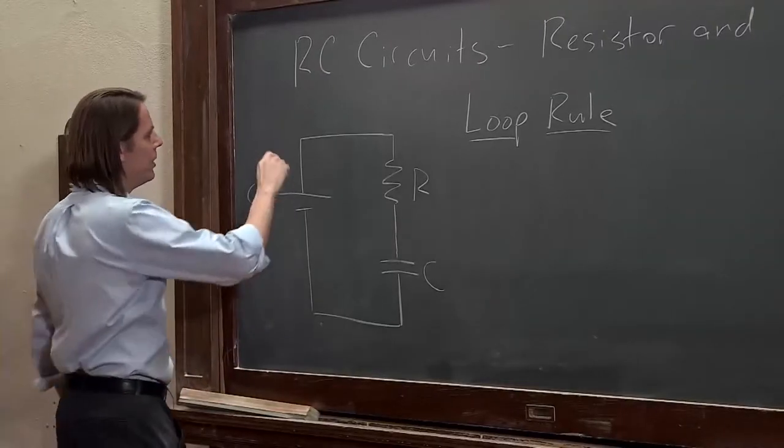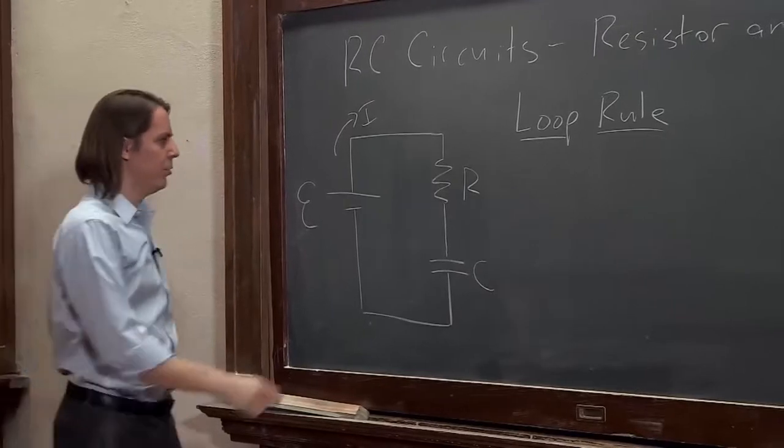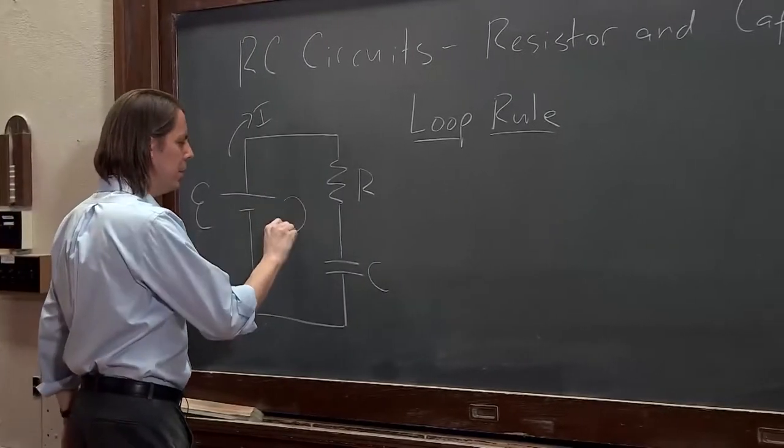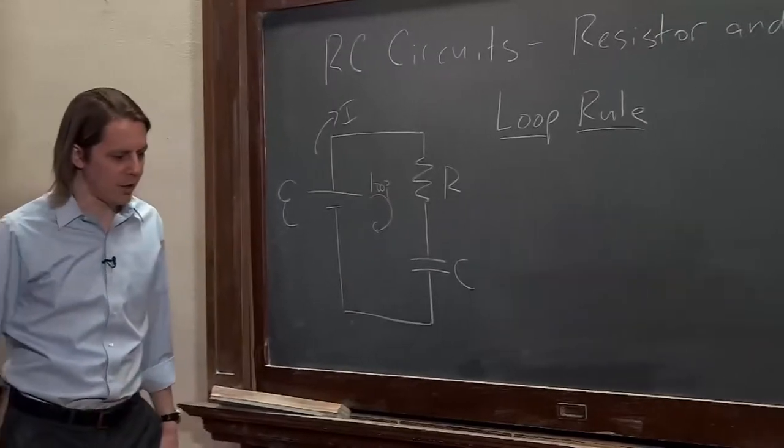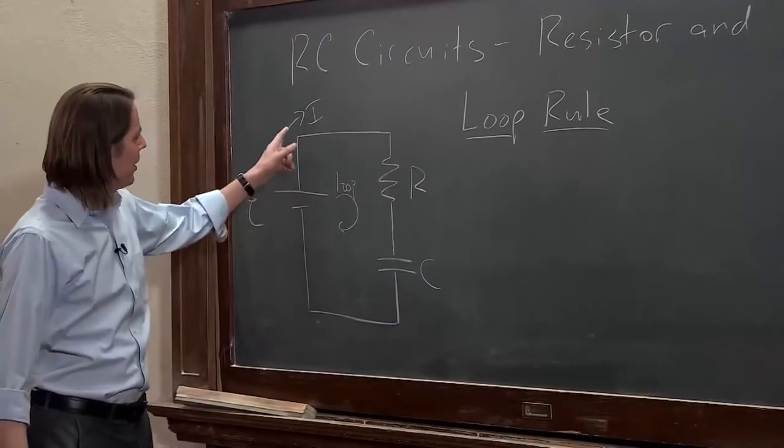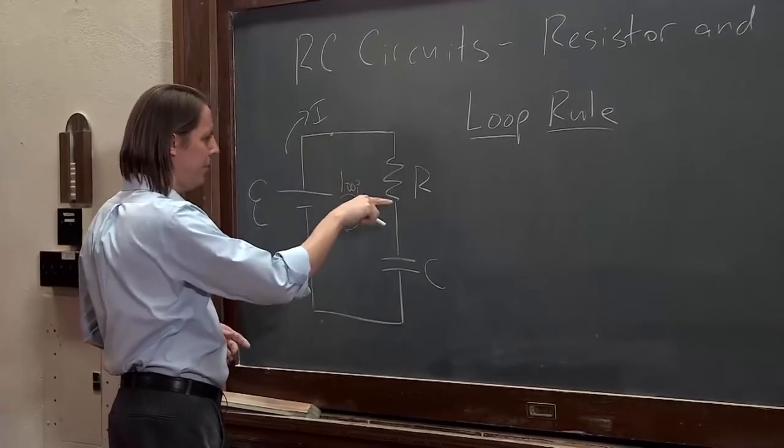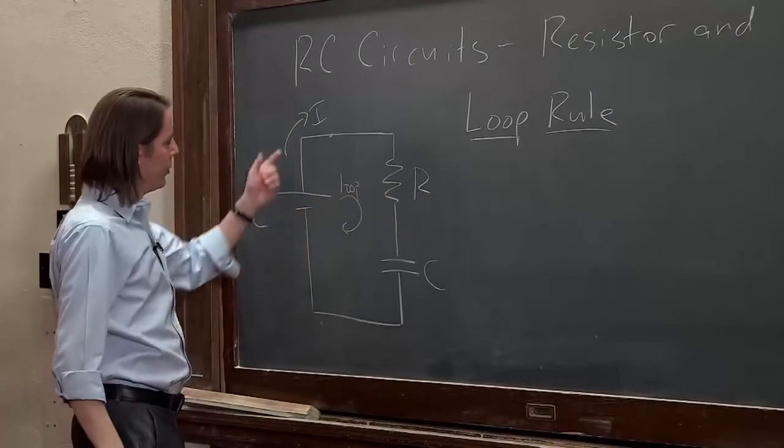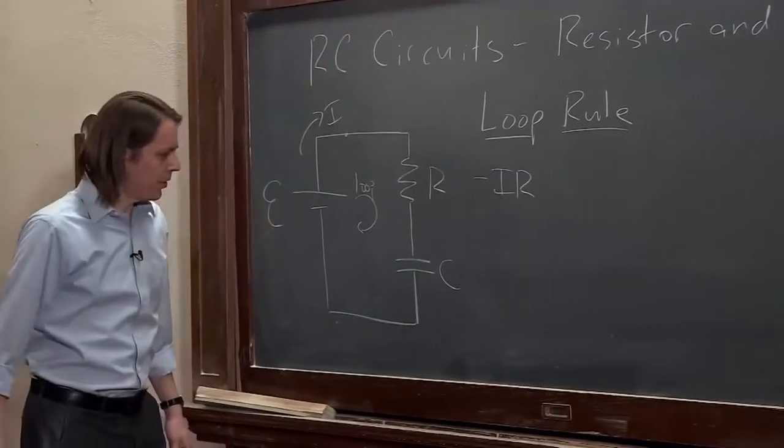The first thing we have to do is define our current direction like that. And for the loop rule, we want to define our loop direction. I like to go clockwise, because that's the kind of guy I am. So we go around. Let's start here. I'm a test charge. I'm moving along. I'm moving with the resistor, with the current. So it's minus IR.